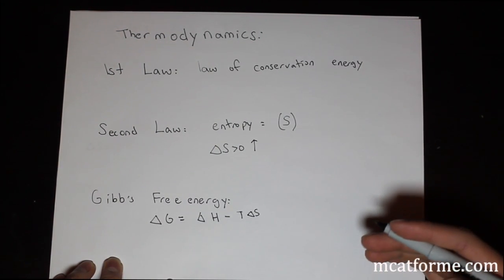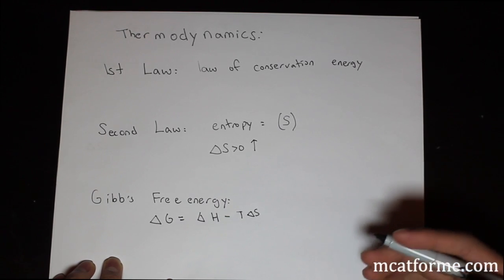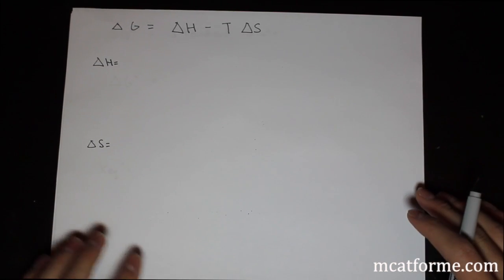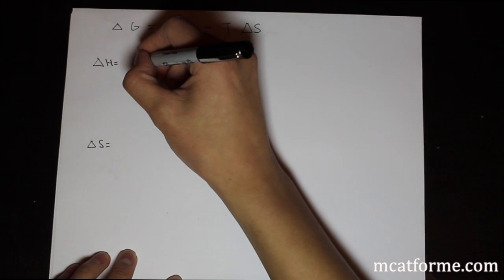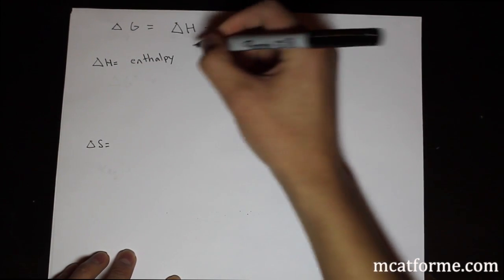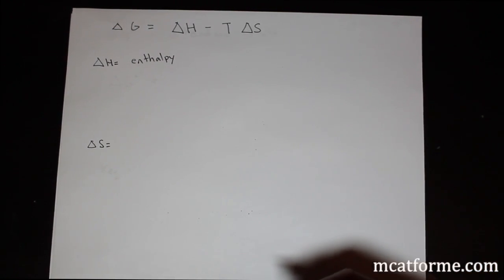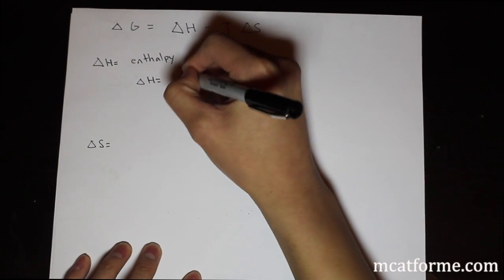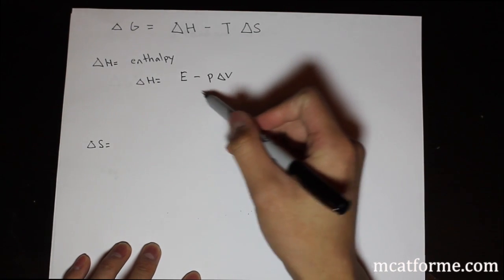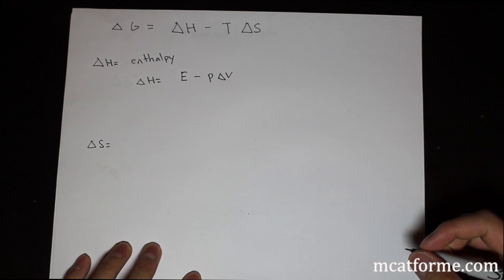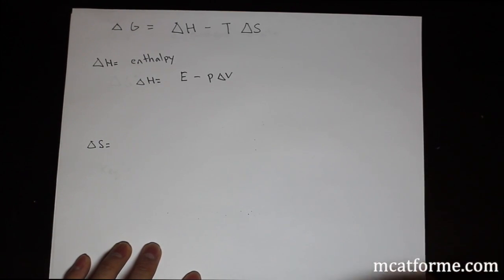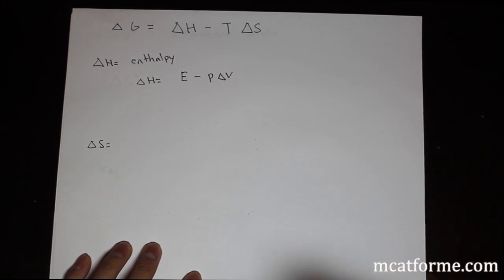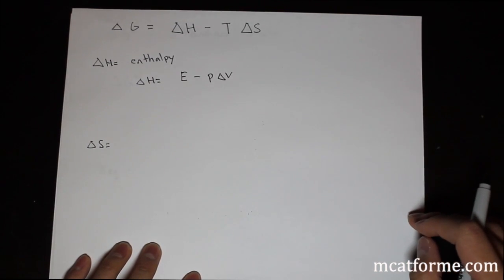The next thing we're going to talk about is Gibbs free energy. We define it as: ΔG = ΔH - TΔS. Delta H is something called enthalpy, which is a measure of the amount of energy used or released at constant pressure. You can think of it as the energy to break or form a bond. For the bio section, just know that enthalpy relates to energy and heat, and it feeds into Gibbs free energy.